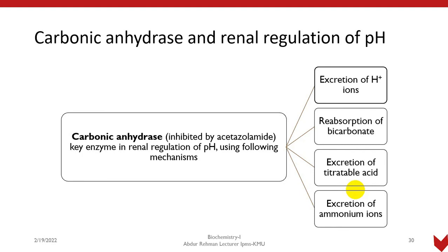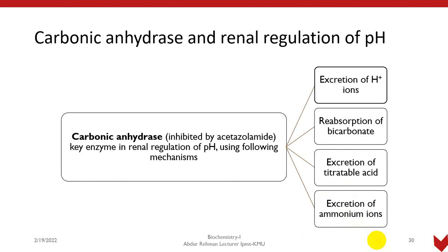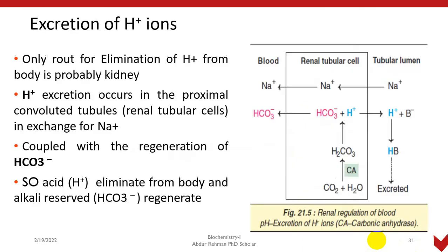Third is excretion of titratable acids such as phosphate, which are excreted out along with their hydrogen ions — titratable acids are those that have a loose proton or a tendency to lose a proton. Fourth is excretion of ammonium ions, which is the most predominant factor that excretes hydrogen ions through urine and regulates blood pH.